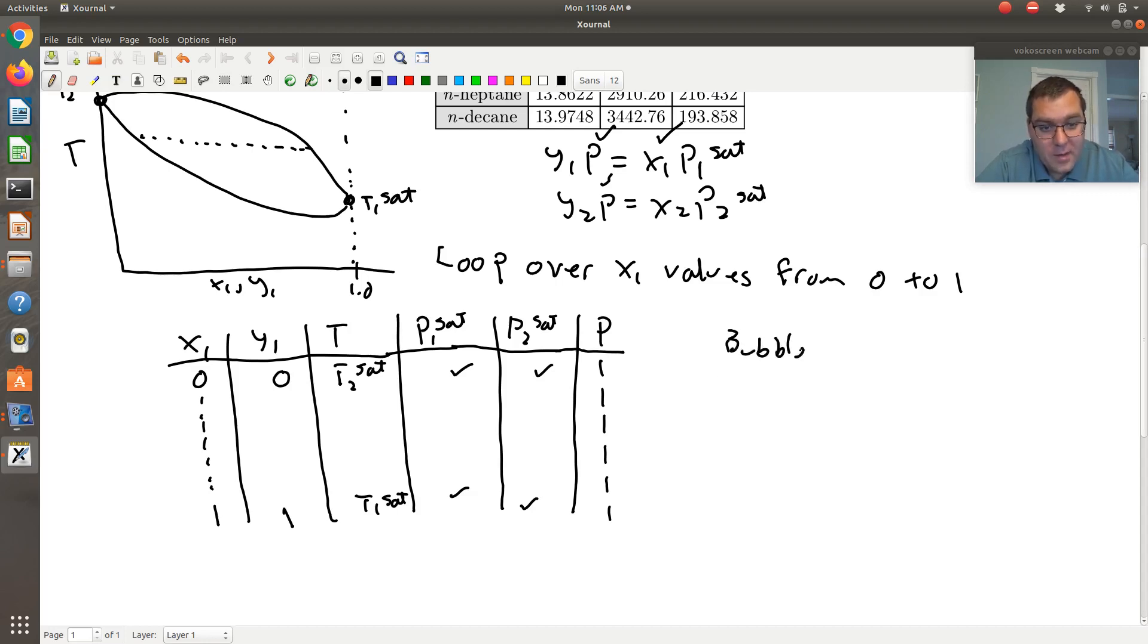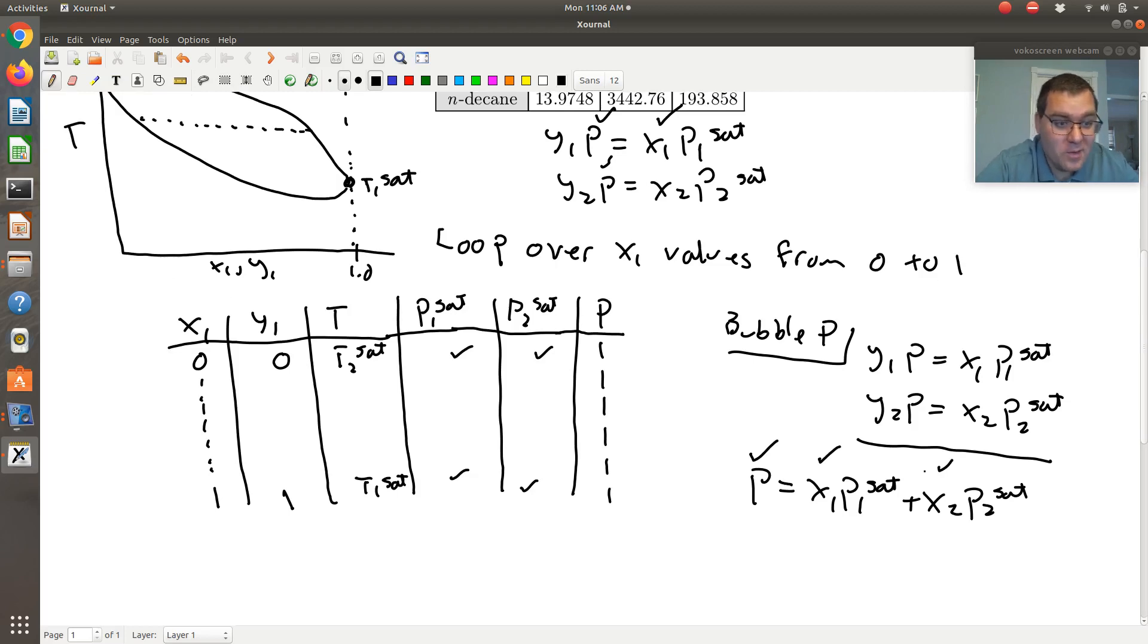Because if I have a bubble P calculation, then the trick is, we're going to specify X and solve for Y. So I add these two equations together and I get P is equal to X1 P1sat plus X2 P2sat. Here I know this, this is one bar. I know X1, then X2, because that's what I specified in that iteration. And so then what I have is a single equation with a single unknown T. I just iterate on T until this equation is satisfied. If I'm using fsolve in MATLAB, then this is readily solved using fsolve by setting this up as an error function.